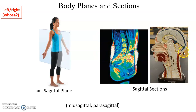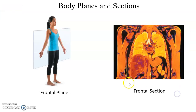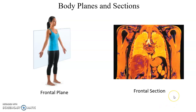Here are some views of sagittal sections. This model here is a mid-sagittal section. Then we have the frontal plane. The frontal plane cuts through the body, giving you a front piece and a back piece — an anterior piece and a posterior piece. Here is what a frontal section looks like going through the body, showing the lungs, the heart, the liver, and the stomach.